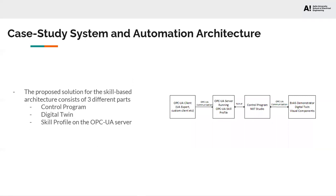The automation architecture for this is split into three different parts. The first part is the control program developed using the IEC 61499 standard on the NXT Studio software. The second part is the digital twin developed on Visual Components. The control application and the digital twin communicate with one another over the OPC UA communication platform. The third part of the project was the skill profile, which was developed using the Process OPC UA Java application. The skill profile and the NXT Studio control program communicated with one another over a simple TCP/IP communication channel.